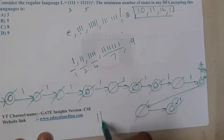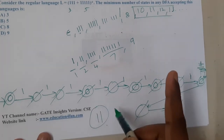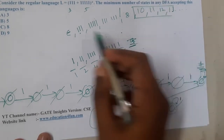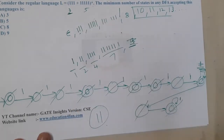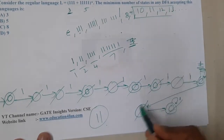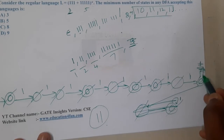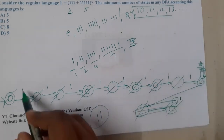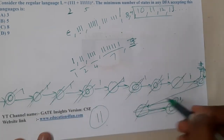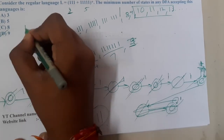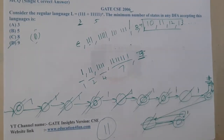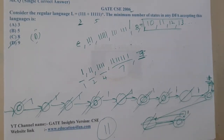Wait — nine ones can also be accepted, right? I can generate nine by using three times three. So nine is also accepted. So indirectly I can stop earlier: 1, 2, 3, 4, 5, 6, 7, 8, 9 — so nine will be the correct answer. Option D is the correct answer.